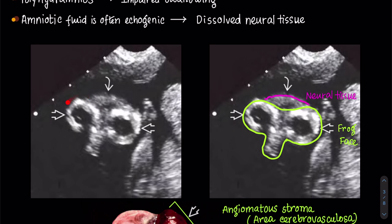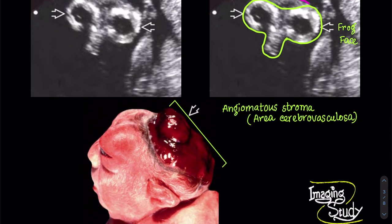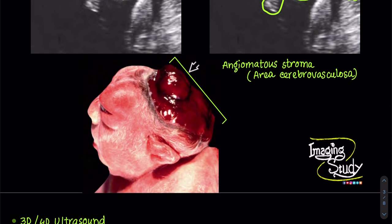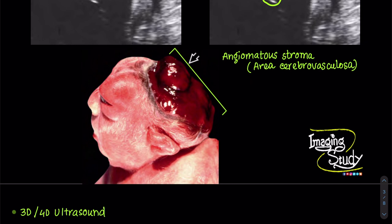This is a second trimester fetus where the neural tissue has worn away — there is anencephaly with marked proptosis of the eyes and near-complete absence of neural tissue above the orbits. This is the lateral view showing the angiomatous stroma covering the defect.